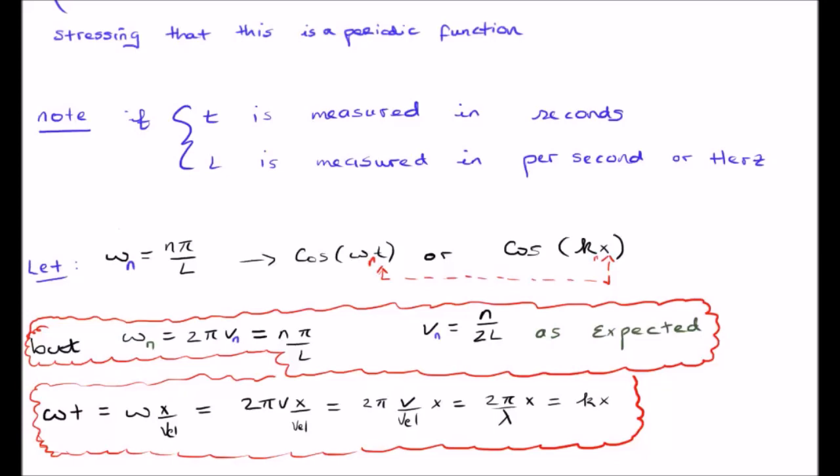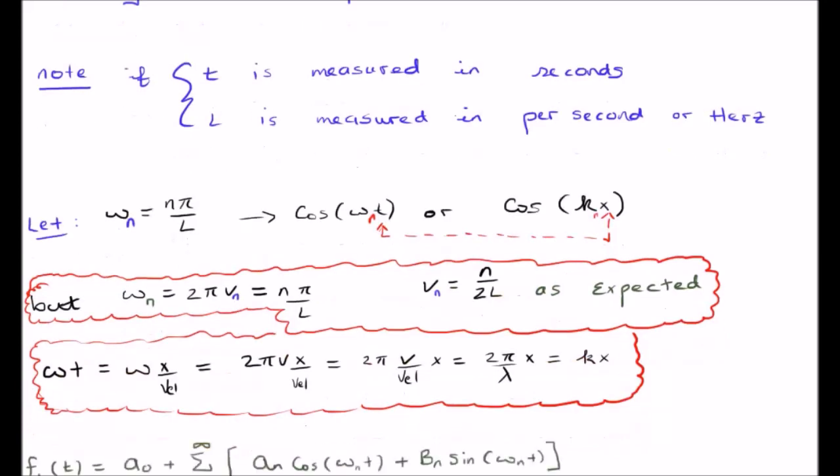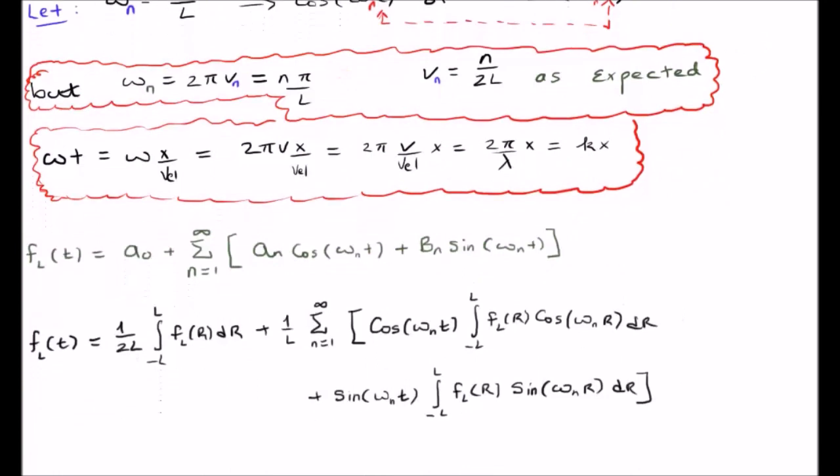Or, if I'm using the dummy variable, it'll be omega sub n times r. And that's exactly what I've written in the middle of your screen here. Nothing new except the omega sub n is being used.